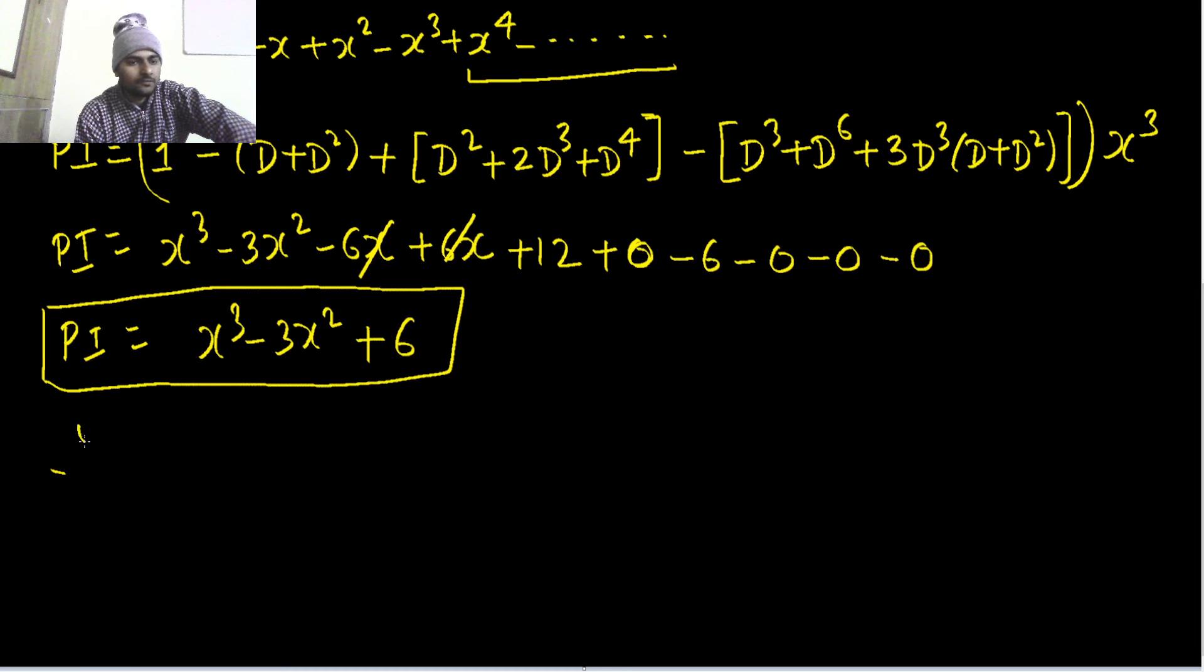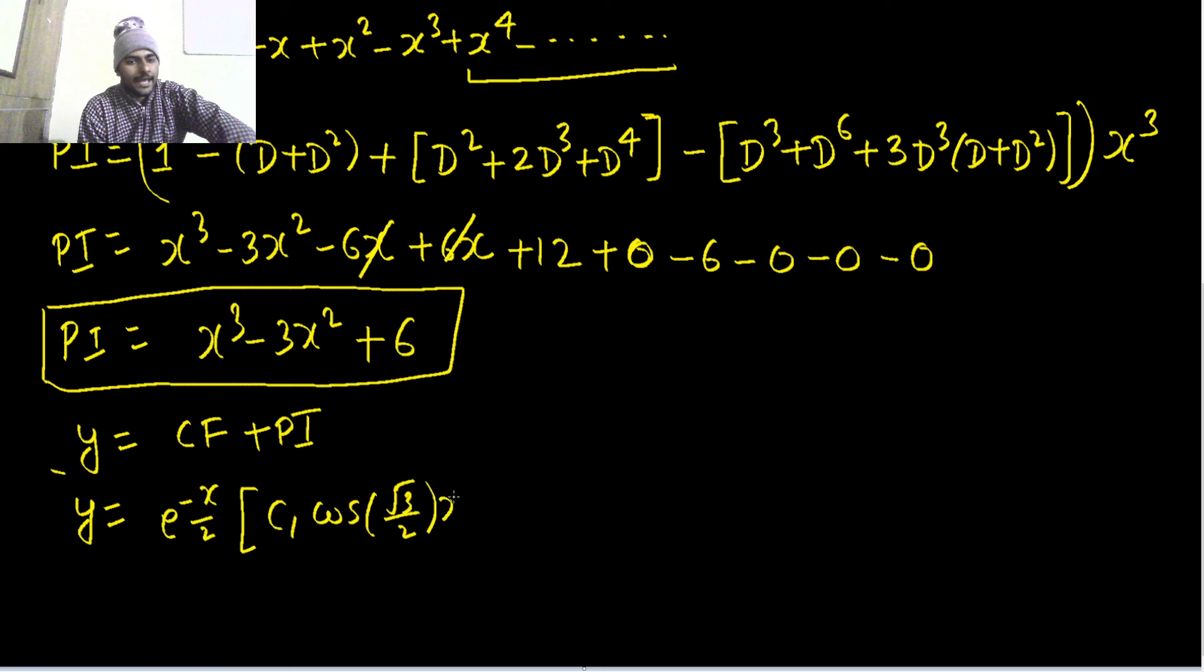Finally, y is CF plus PI, so y will be e^(-x/2) times [c₁ cos(√3/2 x) + c₂ sin(√3/2 x)] plus x³ - 3x² + 6.